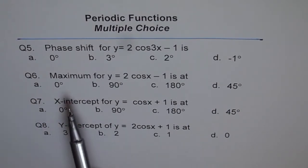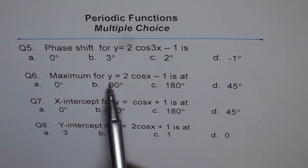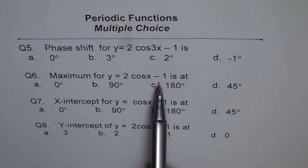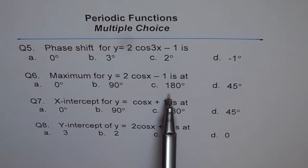Question 6. Maximum for y equals 2 cos x minus 1 is at 0 degrees, 90 degrees, 180 degrees or 45 degrees?